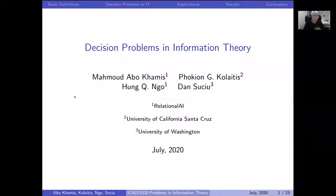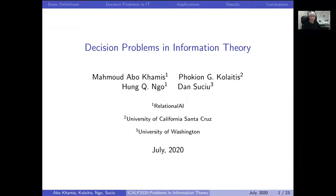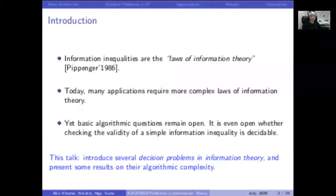Hello. Today I'm going to talk about decision problems in information theory. This is joint work with Mahmoud Aboukhamis, Fokyoenphalitis, and Hank Noam. My name is Tan Suchou. This talk is based on a paper that appears in ICALP 2020, and it is a talk presented at the conference.